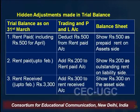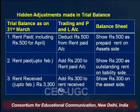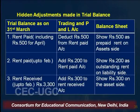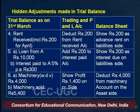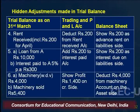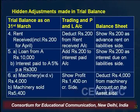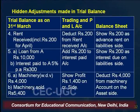The third item is regarding rent received, given as rupees 3,300 up to February. This income is only up to February, so the income for March is pending. Any income related with the current year but not received is known as accrued income. This will be shown on the asset side of the balance sheet and added on the credit side of the Profit and Loss Account. The fourth point is rent received inclusive of rupees 200 for the month of April — this is income received in advance. It needs to be deducted from rent received in the Profit and Loss Account and shown as a liability on the liability side of the balance sheet.